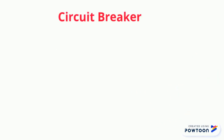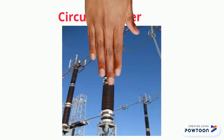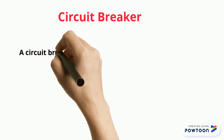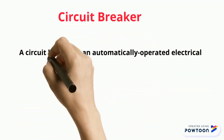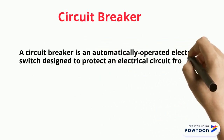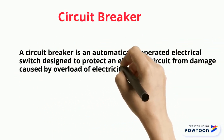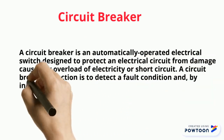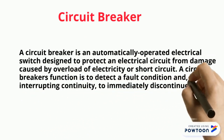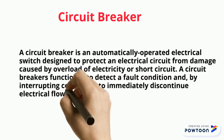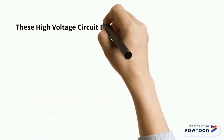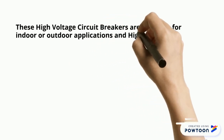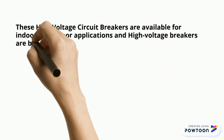Circuit Breaker. A circuit breaker is an automatically operated electrical switch designed to protect an electrical circuit from damage caused by an overload of electricity or short circuit. A circuit breaker's function is to detect a fault condition and, by interrupting continuity, to immediately discontinue electrical flow. These high-voltage circuit breakers are available for indoor or outdoor applications.